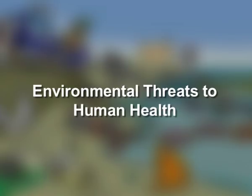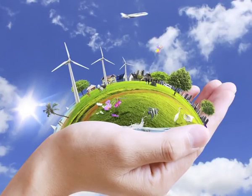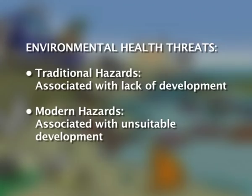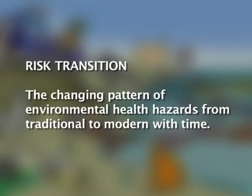People experience the environment in which they live as a combination of physical, chemical, biological, social, cultural and economic conditions that differ according to local geography, infrastructure, season, time of day and many other things. The different environmental health threats can be divided into traditional hazards, which are associated with lack of development, and modern hazards, which are associated with unsuitable development. The changing pattern of environmental health hazards from traditional to modern with time has been called the risk transition.